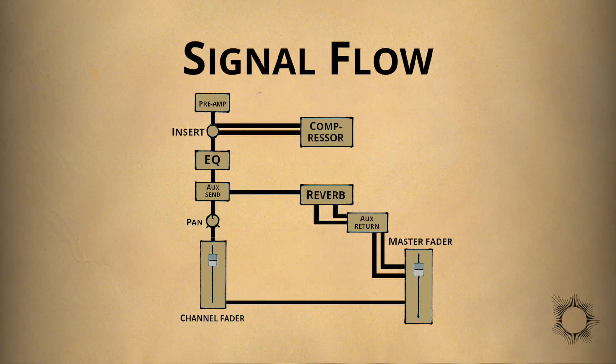Signal flow refers to the way signals travel and are distributed through an audio system, analog or digital. It can be thought of like water running through pipes.